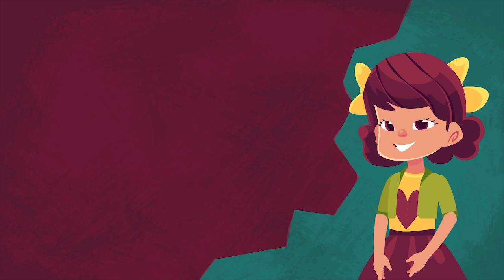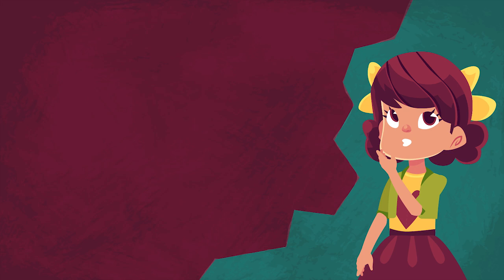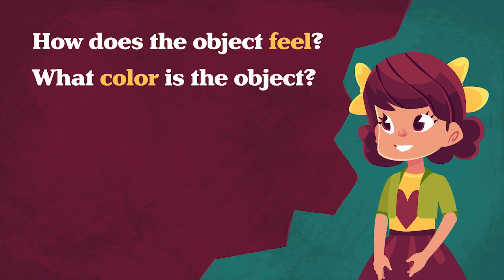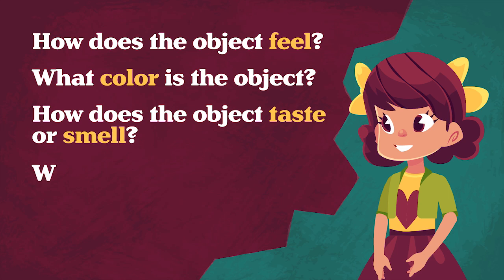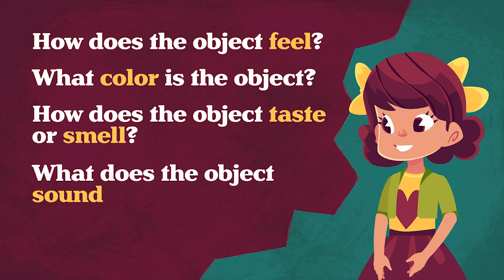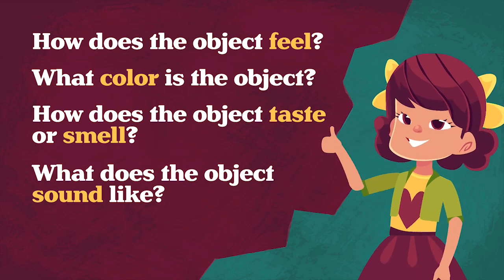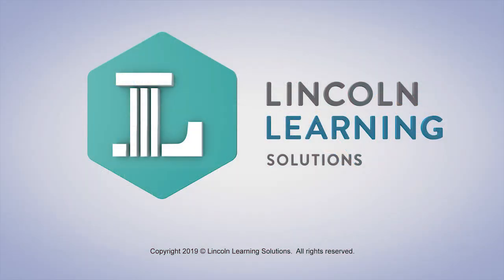When you are making observations, try asking yourself questions that relate to your senses. How does the object feel? What color is the object? How does the object taste or smell? What does the object sound like? These are all great questions to ask yourself. Making observations is a useful skill that can help you describe objects by their characteristics.